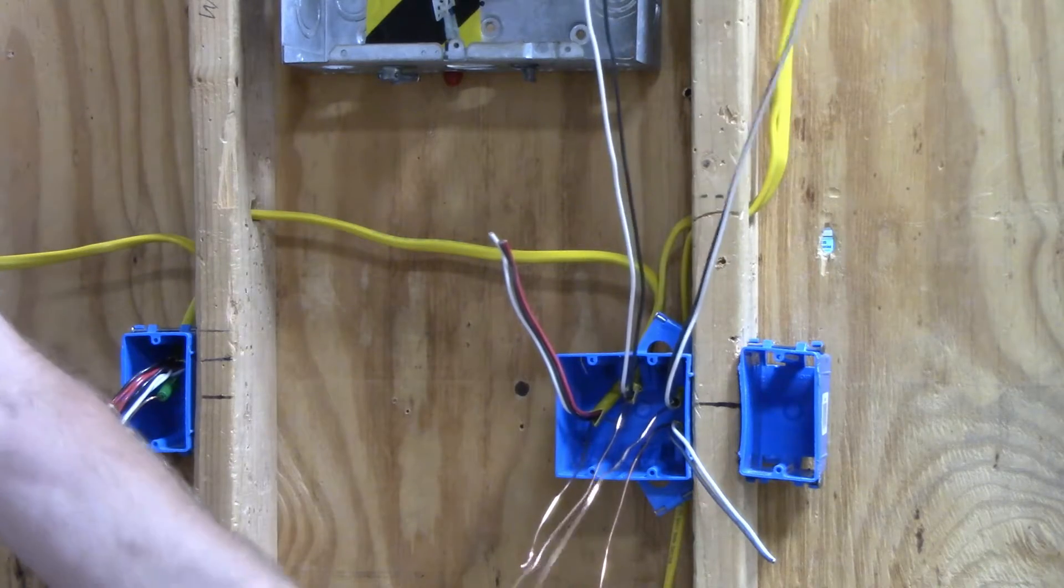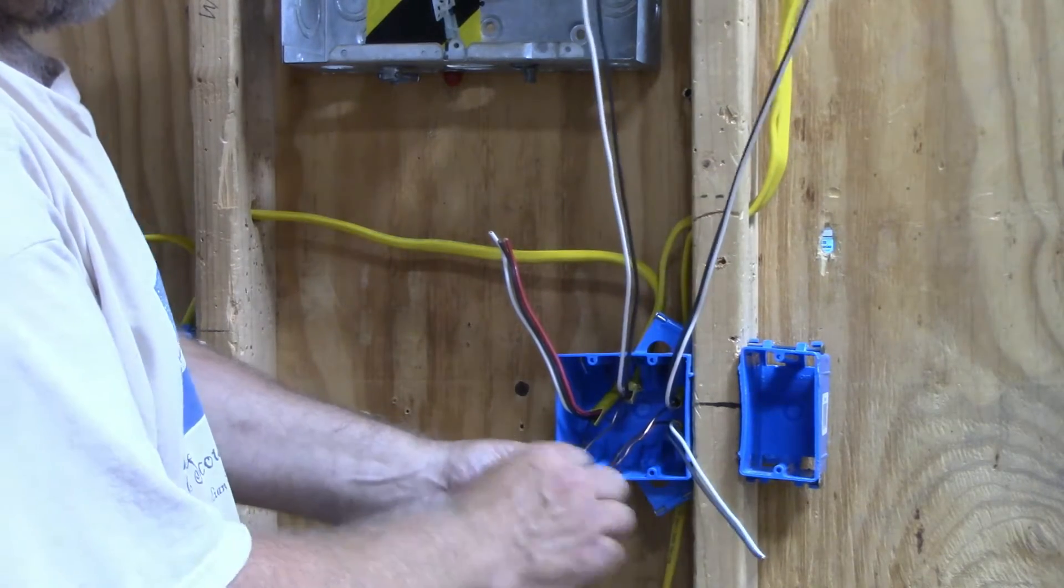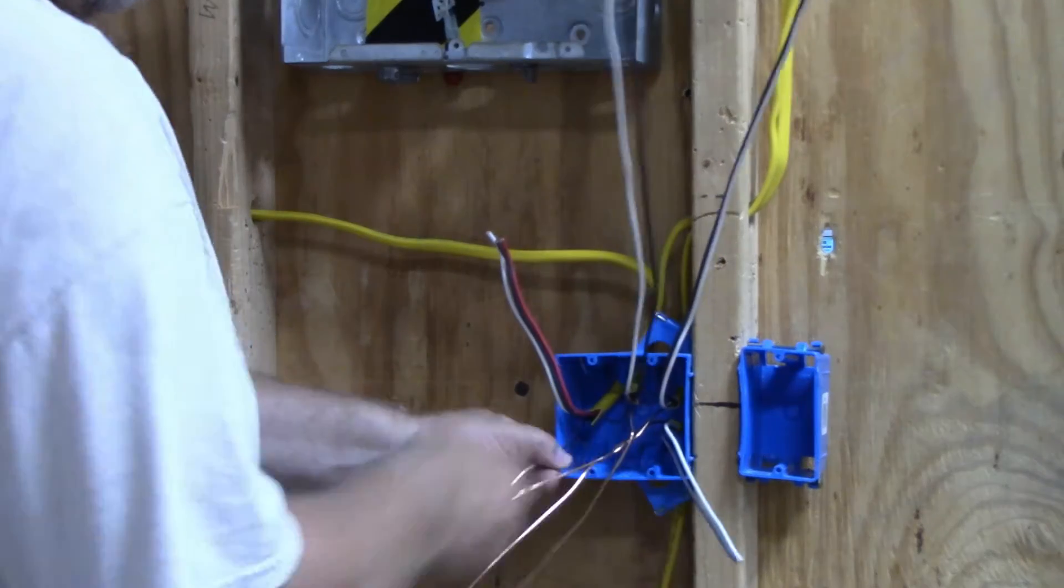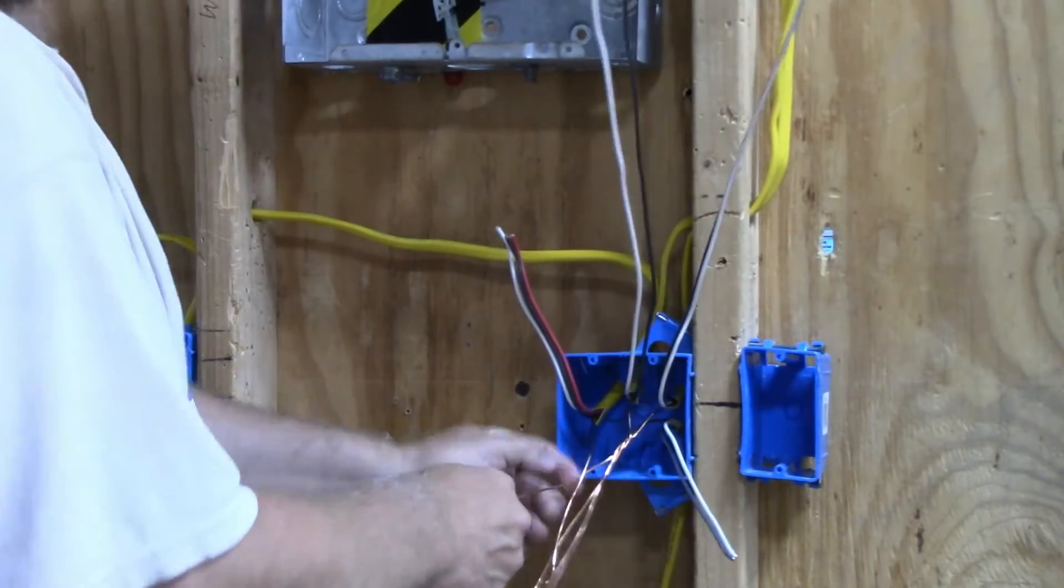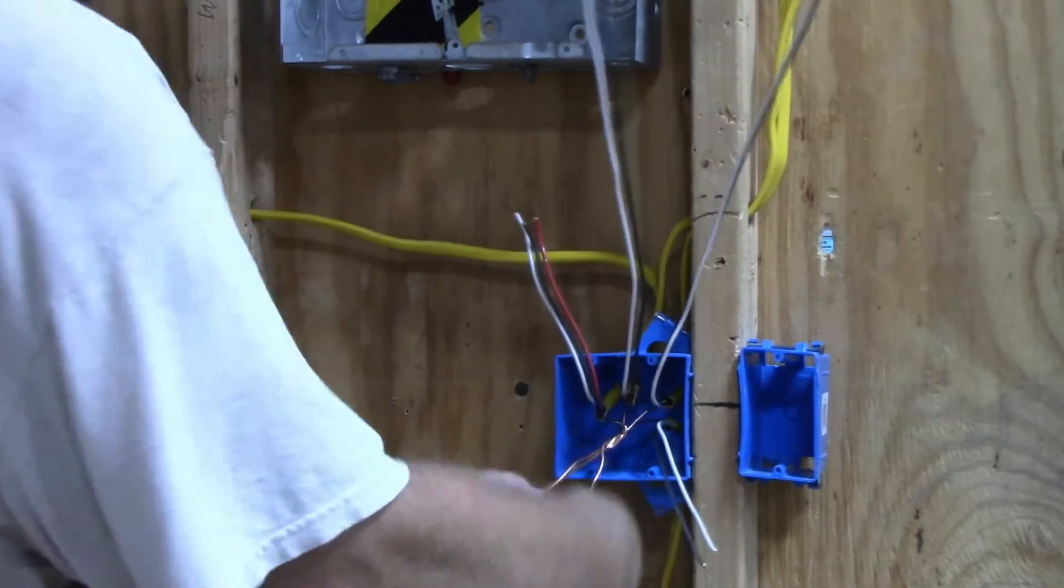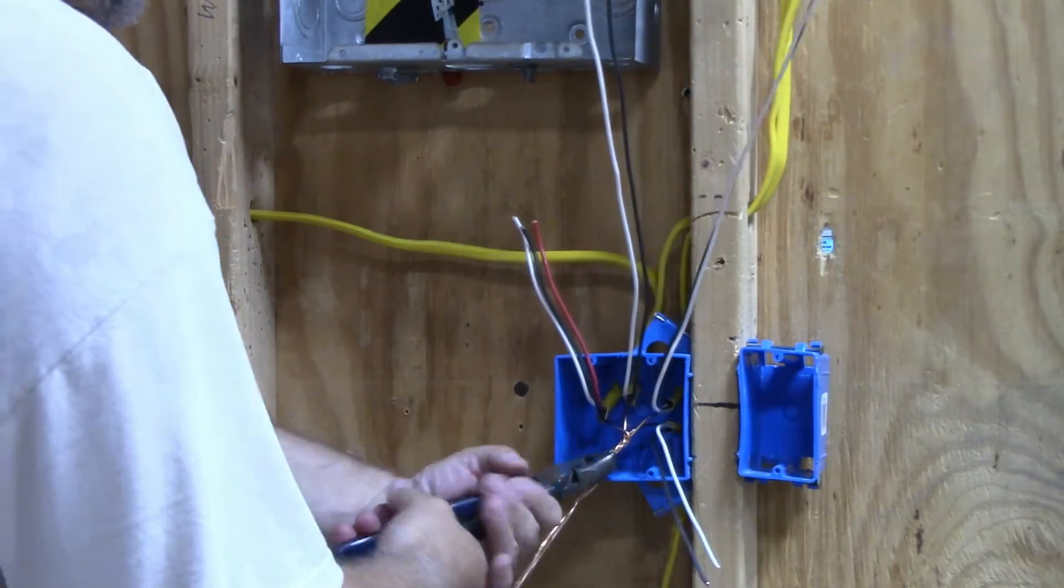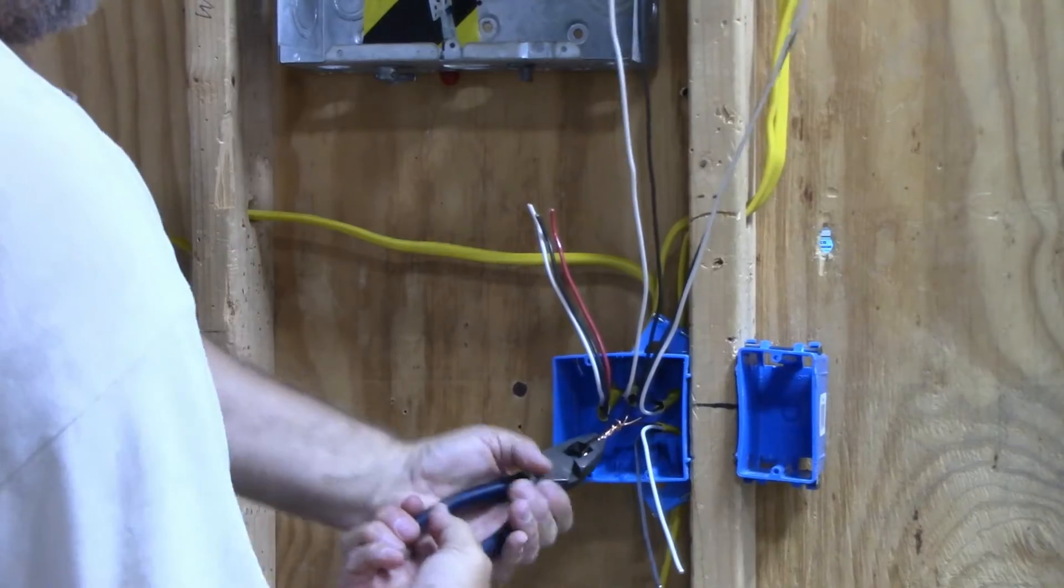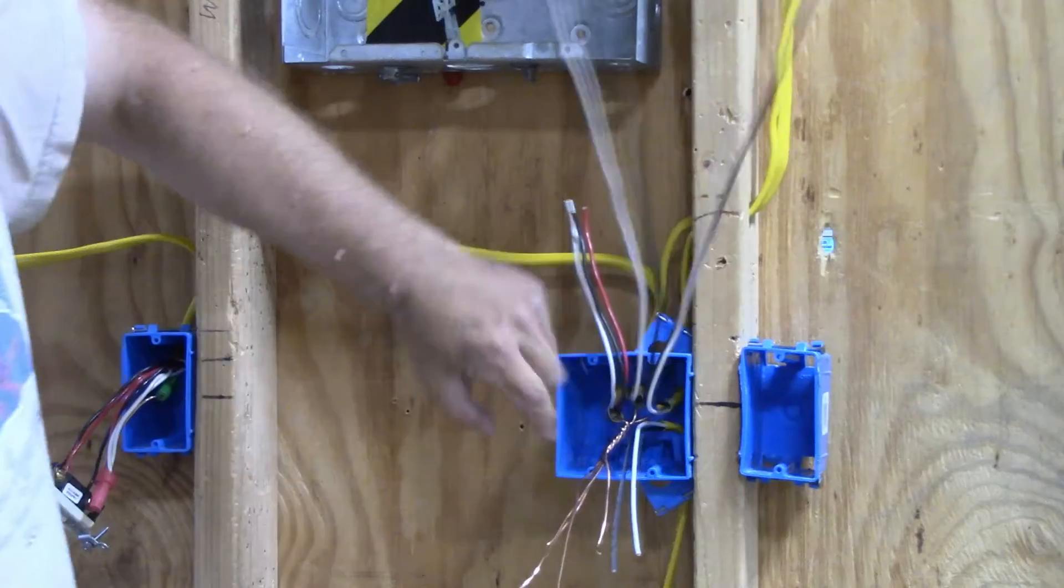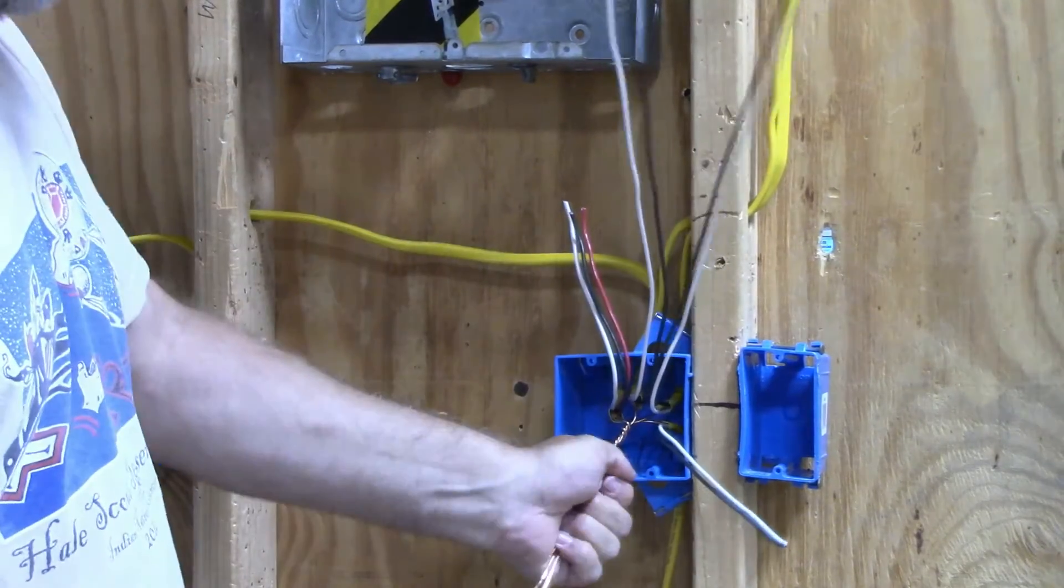First thing we need to do when wiring this two-gang box is to put all of our ground wires together. I'm going to twist all the ground wires together, start twisting them a little bit so they're connected, then take your linesman's pliers and get them nice and tight. You need two ground wires, one for each switch, so the green wire nut won't work in this case.